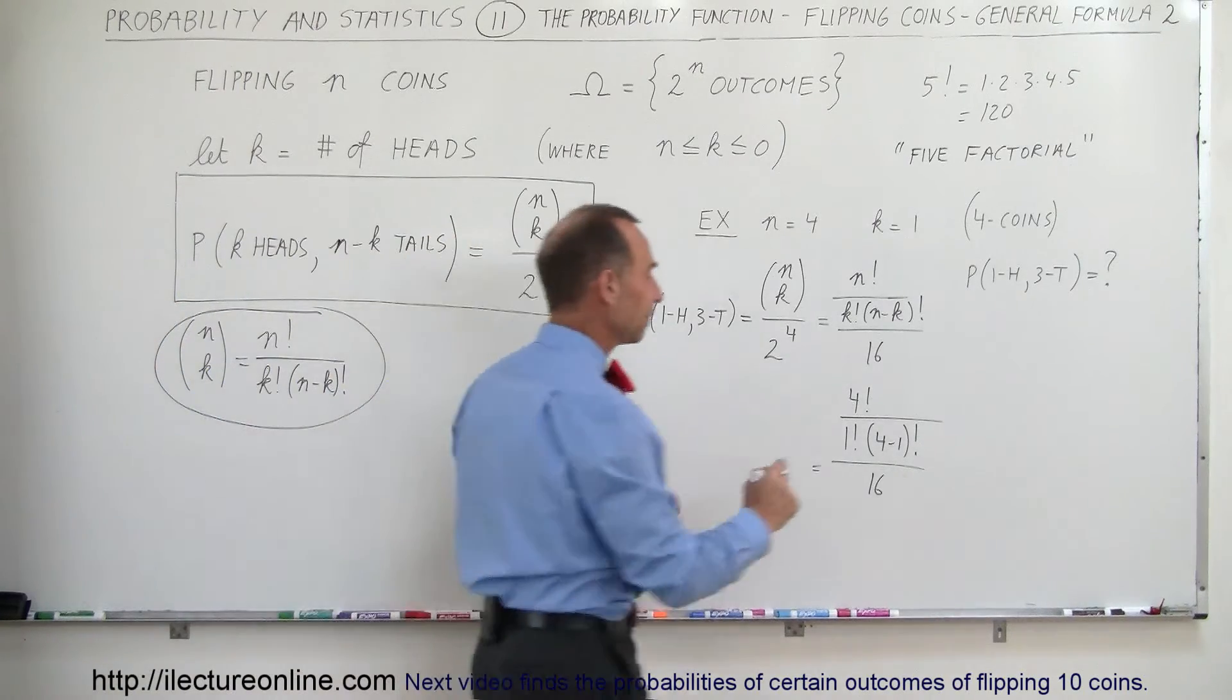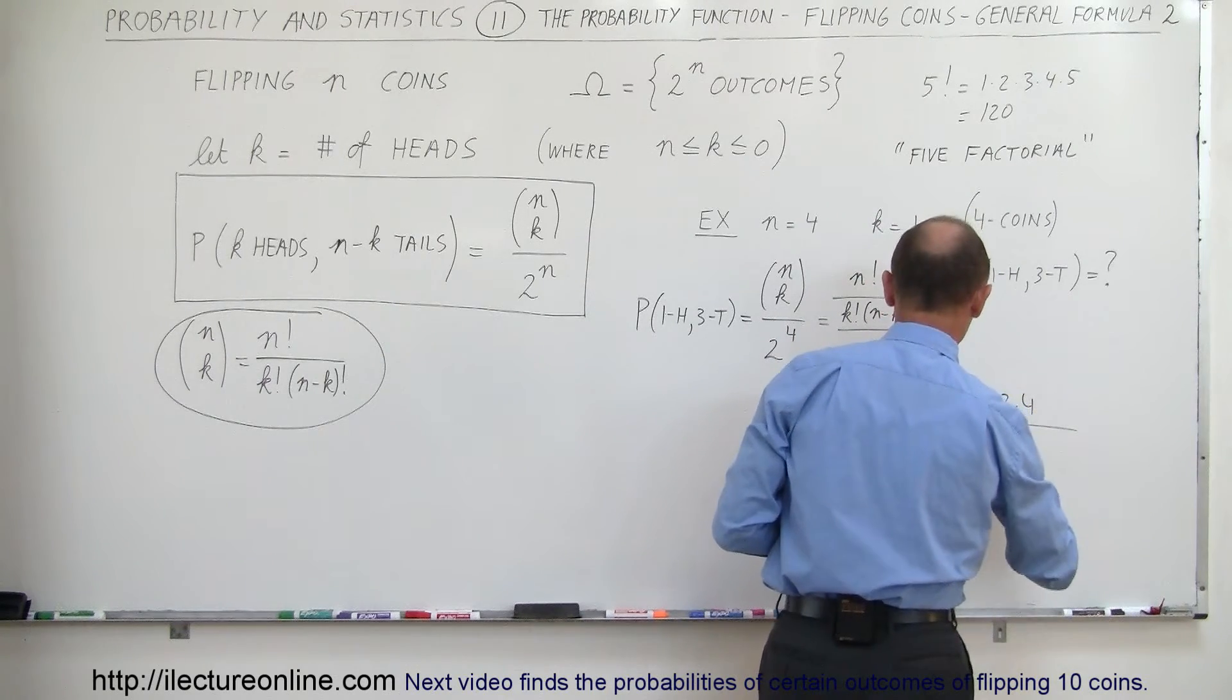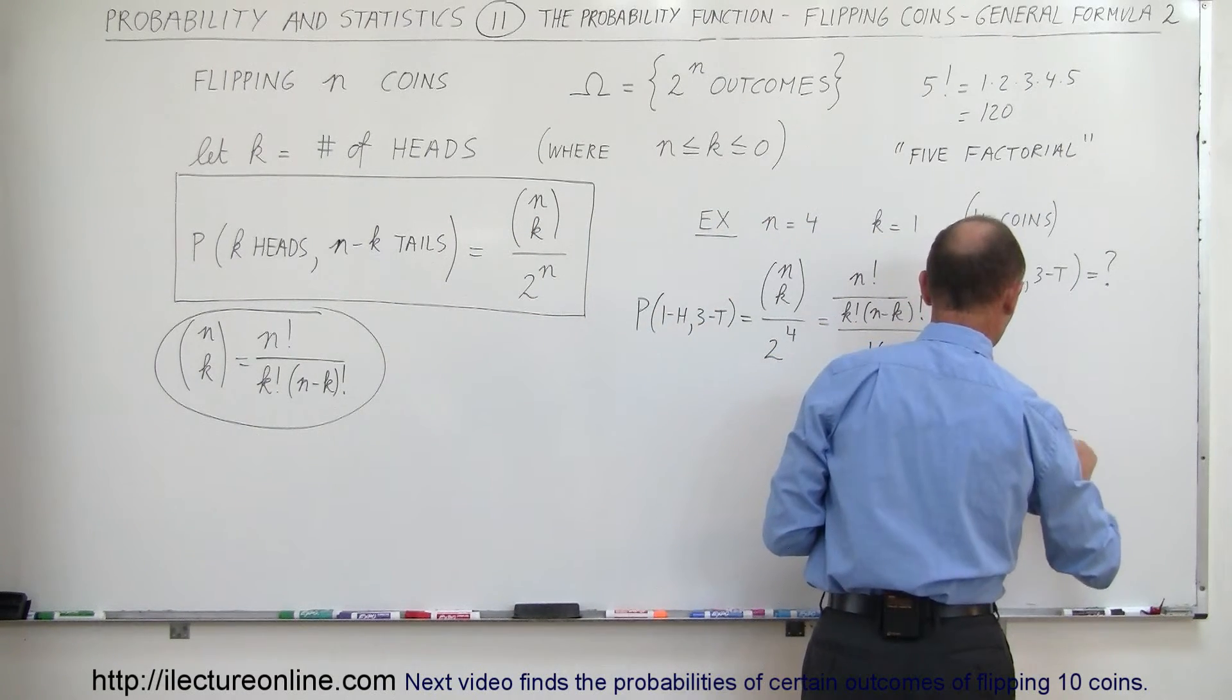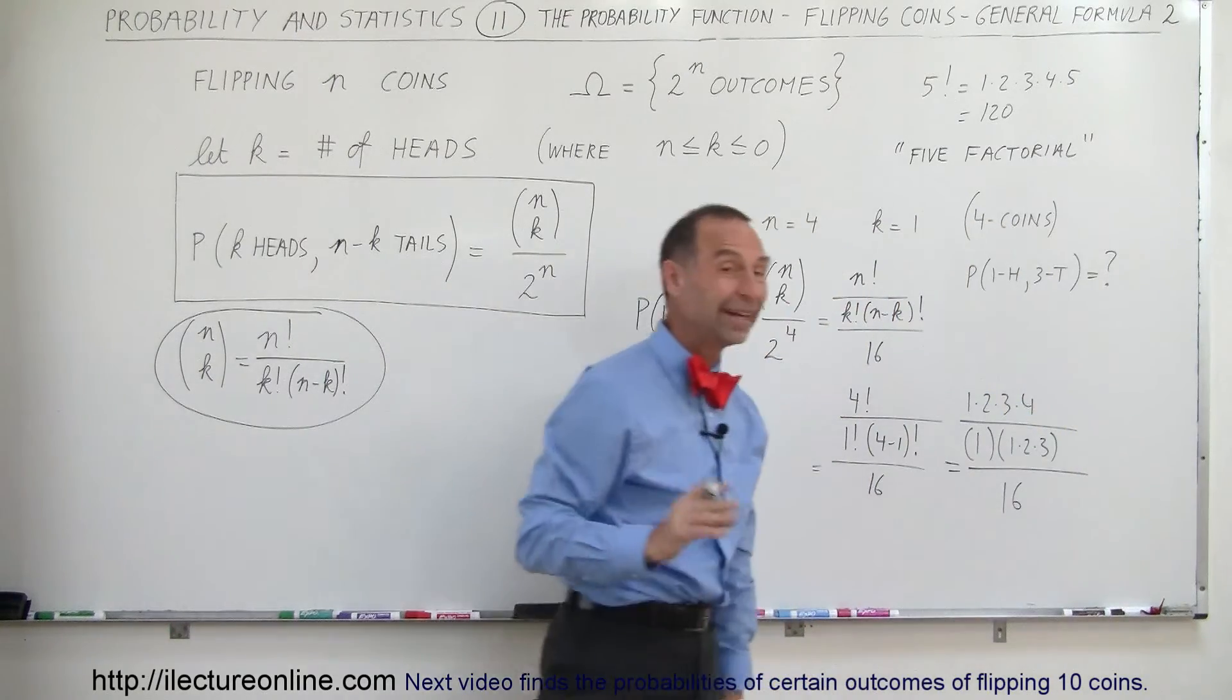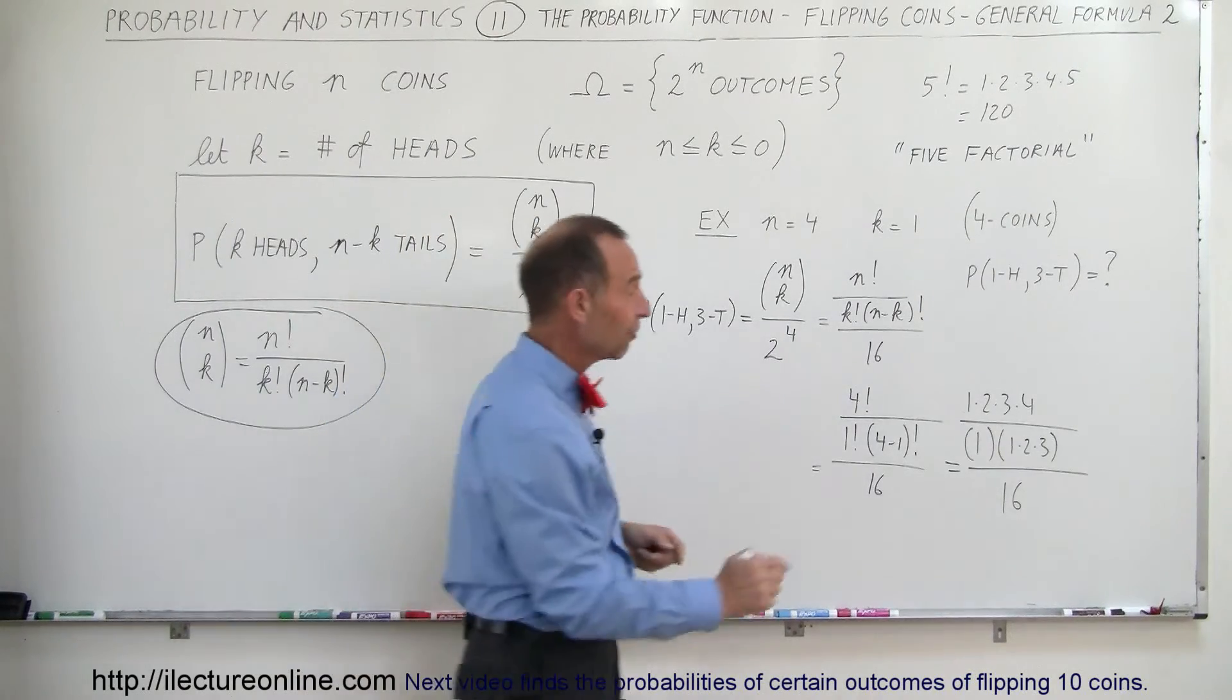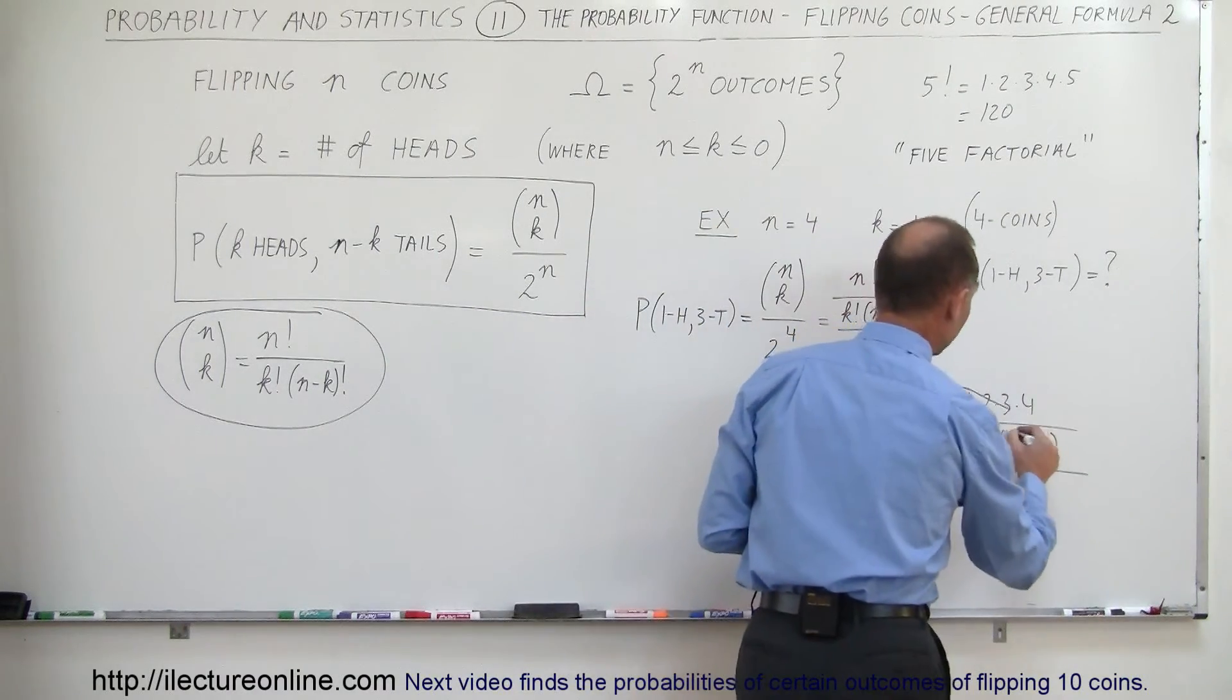To simplify that, this can be written as 1 times 2 times 3 times 4, divided by simply 1, because 1 factorial is simply 1. And then 4 minus 1 would be 3 factorial, which is 1 times 2 times 3, and the whole thing divided by 16. Now, the easy thing to do when we have factorials like that, one factorial divided by another factorial, notice you have 1, 2, 3 in the numerator, 1, 2, 3 in the denominator, and it's all multiplied, which means that they cancel each other out.